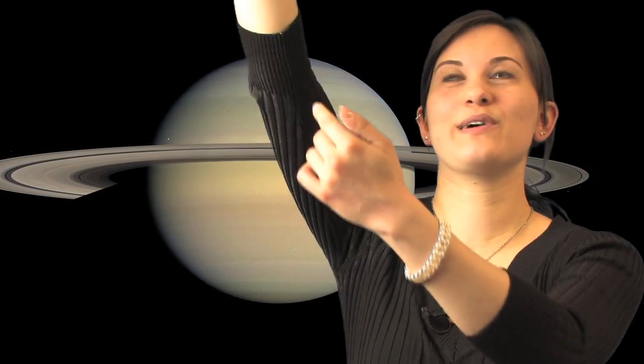Have you ever seen Saturn through a telescope? If you look at Saturn through a telescope, you can see all the rings around it. It looks like a sticker that someone just put on the end of the telescope. It's really cool.